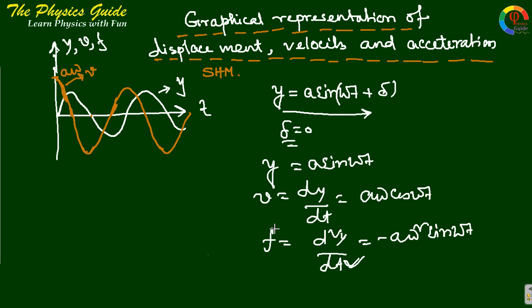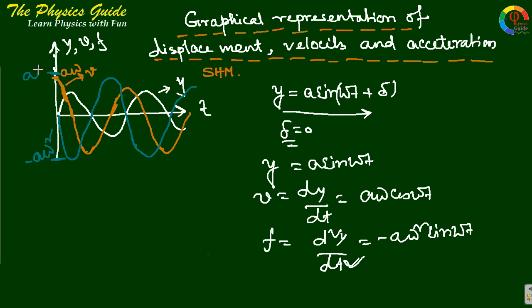Now we are going to plot acceleration with respect to time. Acceleration equals minus Aω² sine(ωt). Its maximum magnitude is Aω². At t equals zero it starts from the origin. The maximum value gives minus Aω², and it is in phase with the displacement y. The peaks give values of minus Aω² and Aω².